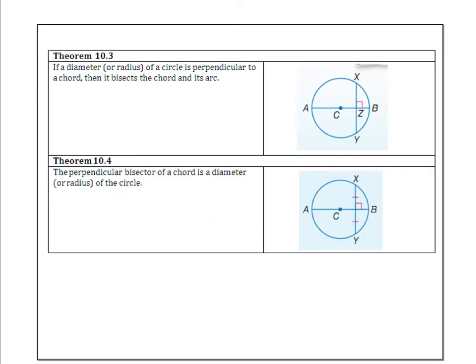If a diameter or radius of a circle is perpendicular to a chord, then it bisects the chord and its arc. So if this right here is perpendicular to this right here, if AB is perpendicular to XY, then, let me just erase a little bit, then this gets cut in half and this gets cut in half.